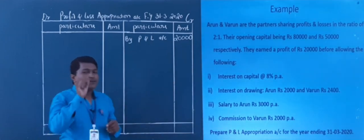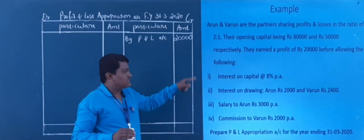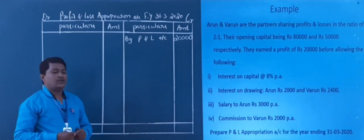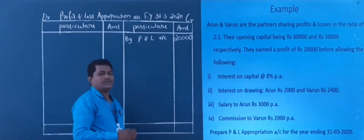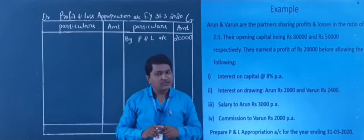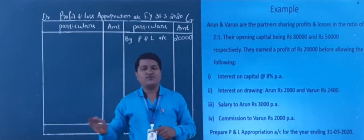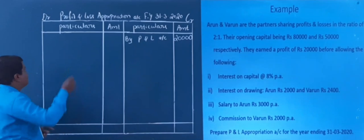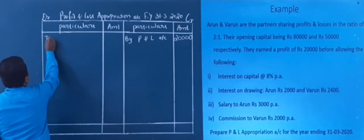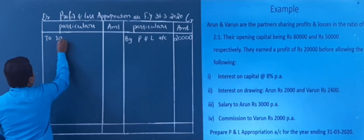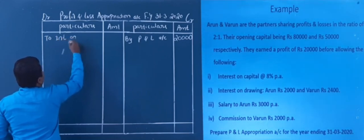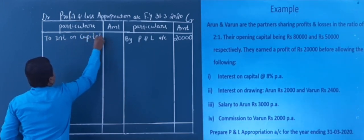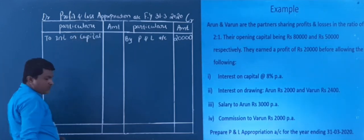After profit transfer, we go for adjustments. The first adjustment is interest on capital — this is an expense to the firm, so it goes on the debit side. We calculate interest on capital separately for each partner: Arun and Varun. I will go for Arun first.